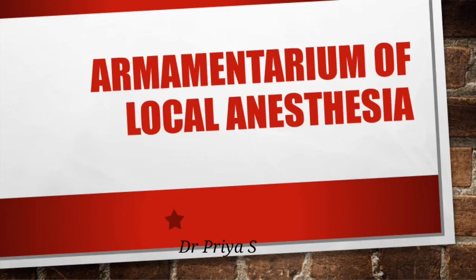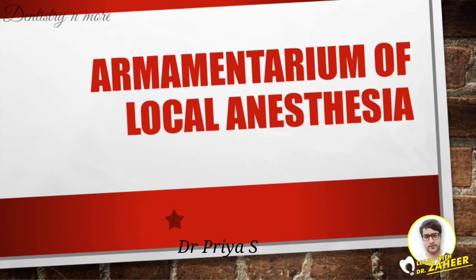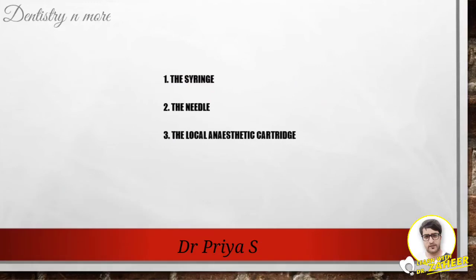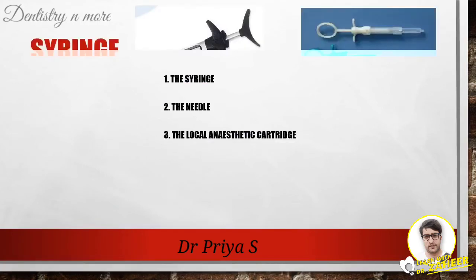In this lecture we shall discuss the armamentarium of local anesthesia. The main equipment necessary for the administration of local anesthetic includes the syringe, the needle, and the local anesthetic cartridge. In addition, you may also need topical antiseptic, topical anesthetic, applicator sticks, cotton gauze, and a hemostat.